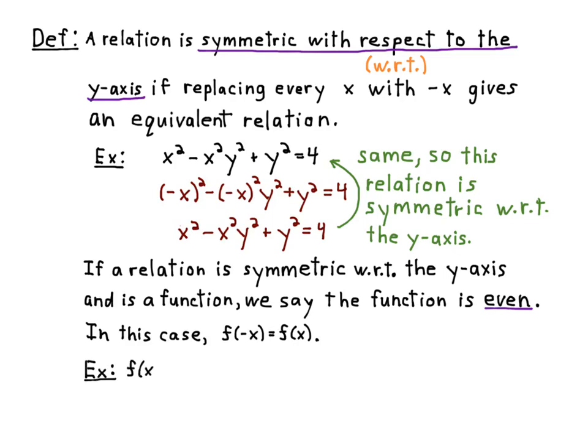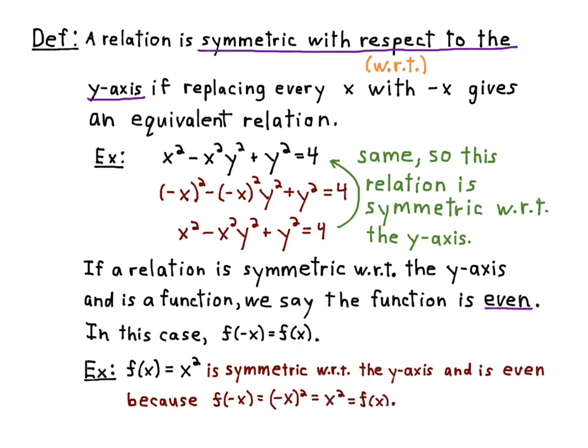So, for example, f of x equals x squared is symmetric with respect to the y-axis and is even because f of negative x equals negative x, the quantity squared, equals x squared equals f of x. So f of negative x equals f of x.